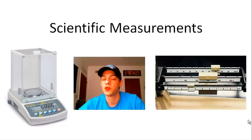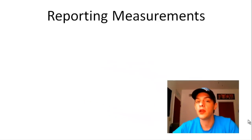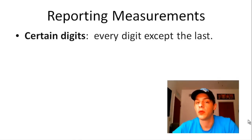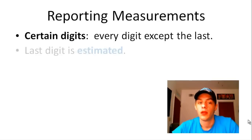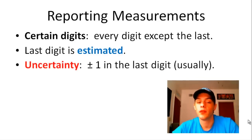When it comes to scientific measurements, any number that comes from a scientific measurement is going to reflect the sensitivity of the device used to take that measurement. Every reported scientific measurement has three main components. The first consists of the certain digits, which is every digit except for the last digit. The last digit in a scientific measurement is estimated. The final and perhaps most important part is the uncertainty of the scale, which is usually plus or minus 1 in the last digit.